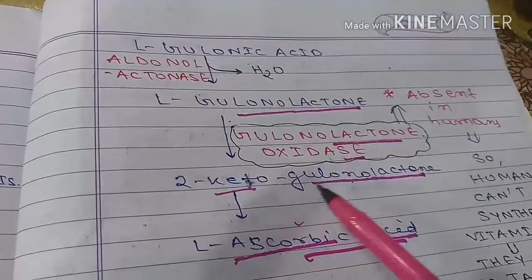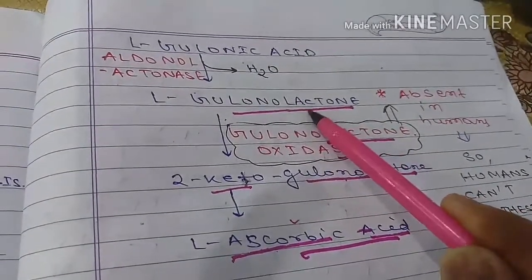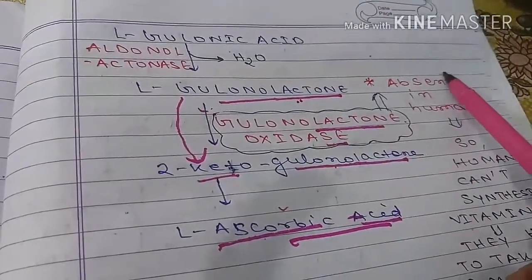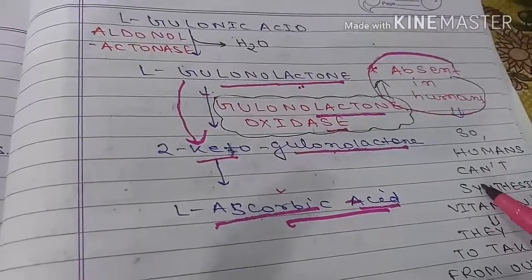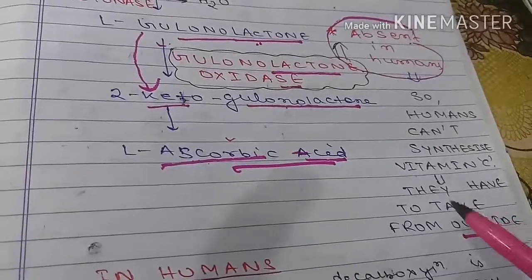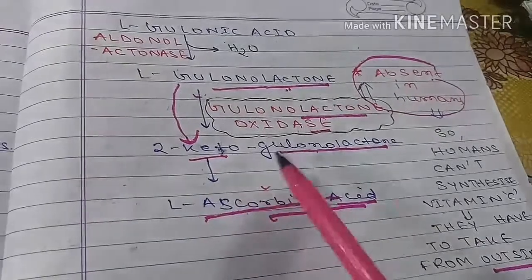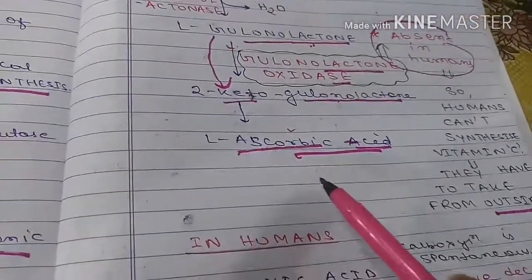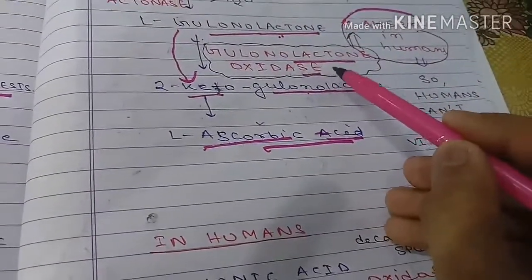The ascorbic acid synthesis pathway goes: gulonolactone → keto-gulonolactone → ascorbic acid. This pathway for Vitamin C synthesis occurs in lower plants and lower animals. In humans, the enzyme gulonolactone oxidase is absent, so humans cannot synthesize ascorbic acid and must obtain it from the diet.